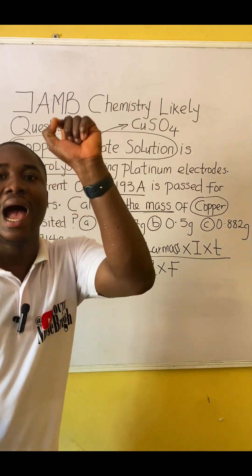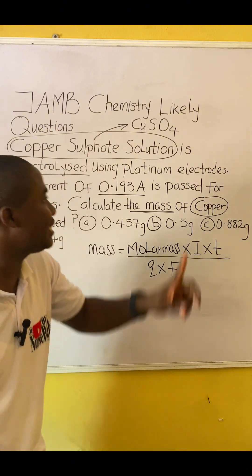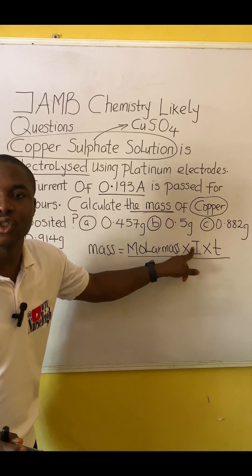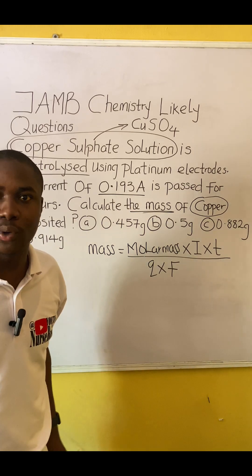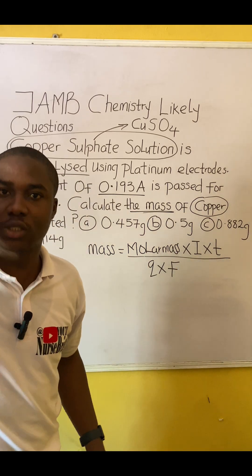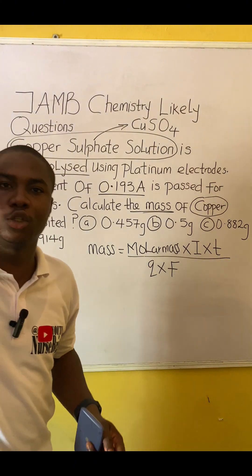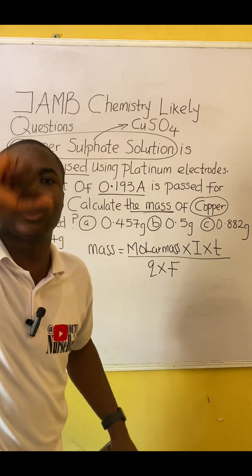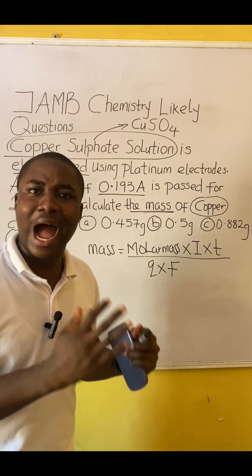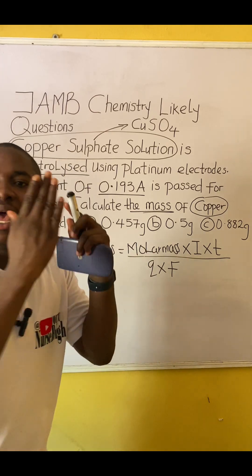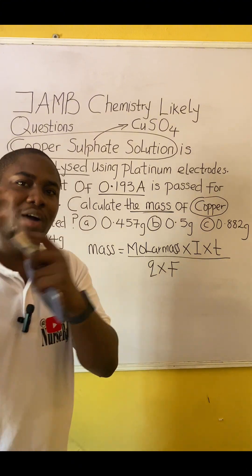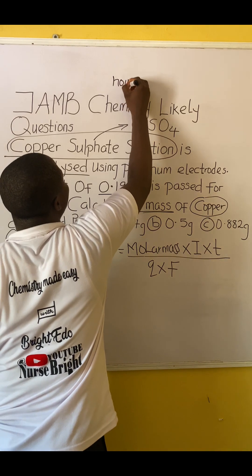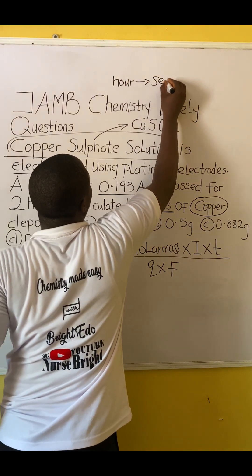'I' simply means current, expressed in amperes. The value 0.193 is what goes in place of I. 'T' means time — it is not temperature. You must know that whenever you are solving any question in electrolysis, your time must be converted to seconds. If the time is in hours, convert to seconds; if in minutes, convert to seconds.